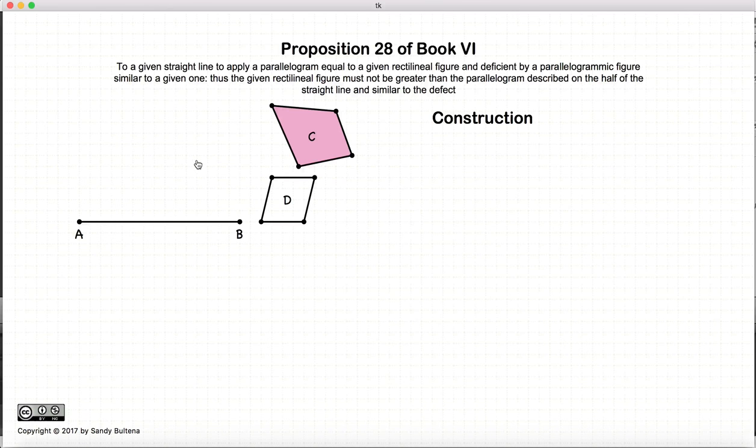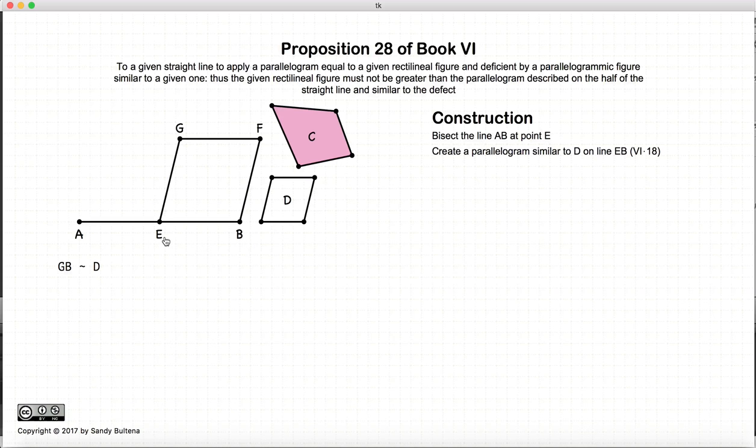So let's begin our construction. The first thing we do is we bisect the line at point E, and then we create a similar parallelogram to D on EB. So GB is similar to D.